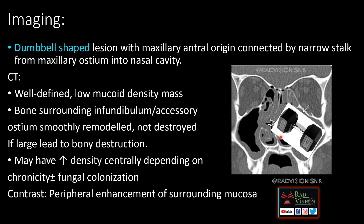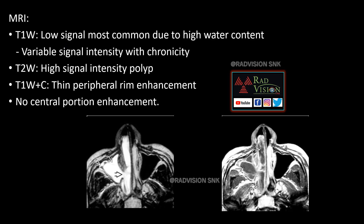If large, it can lead to bony destruction. It may have hyperdensity centrally depending on chronicity or fungal colonization. On MRI, we usually see T1 iso to low signal intensity and T2 high signal intensity. On post-contrast, we see thin peripheral rim enhancement. No central portion enhancement is seen.